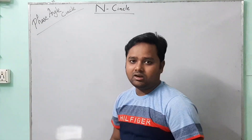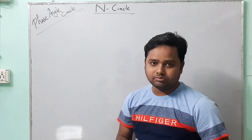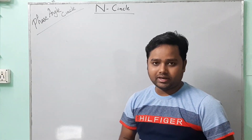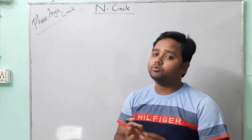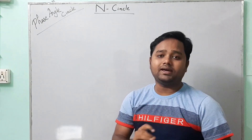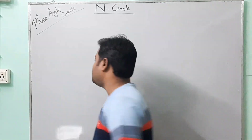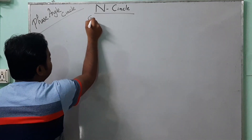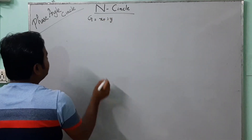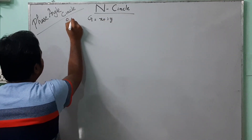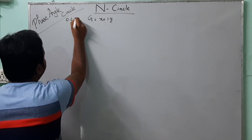In the constant phase angle circle, first we have to consider the open loop transfer function, that is G(jω). As in the previous class, we take G(jω) equal to x plus iy. So G is equal to x plus iy. This is the open loop transfer function.